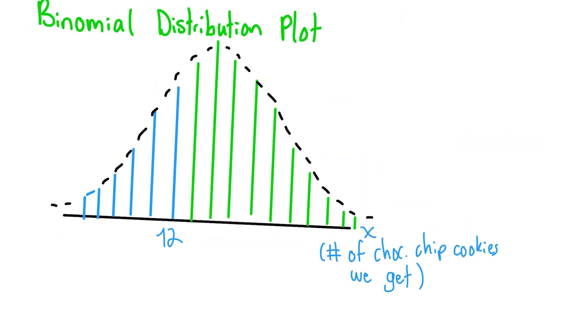We can use this formula to calculate this area, which then represents the possibility of getting 12 or fewer chocolate chip cookies. If that probability is less than our established 5% significance level, we can reject our null hypothesis.